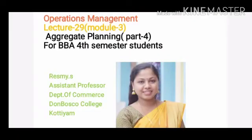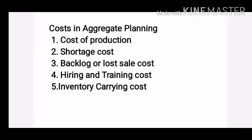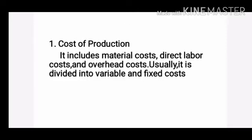Hello students, welcome back to Bosco Campus Vision. This is the 29th lecture on operations management. In today's session we are going to discuss cost in aggregate planning. There are five costs in aggregate planning: first, cost of production; second, shortage cost; third, backlog or lost sale cost; fourth, hiring and training cost; fifth, inventory carrying cost. Let us discuss each point in detail.